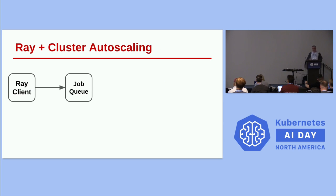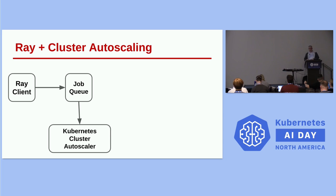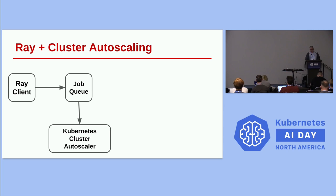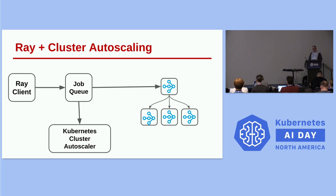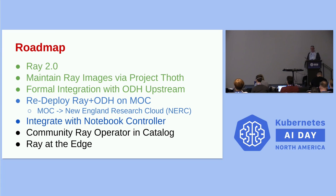Another thing we're looking at with IBM is Ray plus cluster-level autoscaling — not just scaling pods but actually scaling the size of the cluster using autoscalers, bringing in extra compute nodes from AWS or Google Cloud. In this mode, a Ray client submits a job object into a job queue, which talks to a cluster-level autoscaler. If the cluster isn't already big enough, it invokes Kubernetes autoscaling to bring in more compute nodes and more GPUs. When the job is done, the cluster can spin back down. It's a nice cluster-level autoscaling experience.